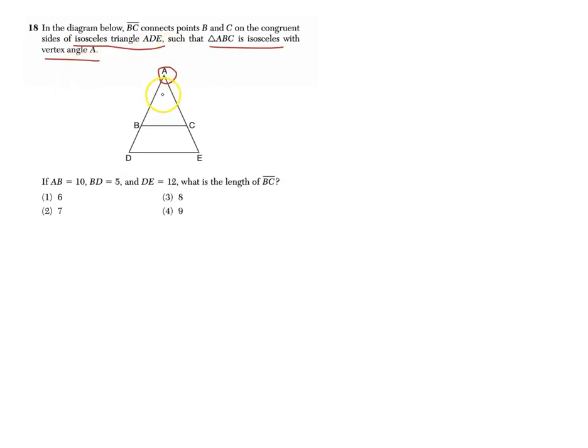So we got that out of the way, we know these two triangles are similar. Now let's prove what the question is asking. We know we're given a bunch of side lengths and we need to find what BC is. Let's label the diagram: AB is 10, BD is 5, DE is 12, and we don't know what BC is so we're going to label that x.